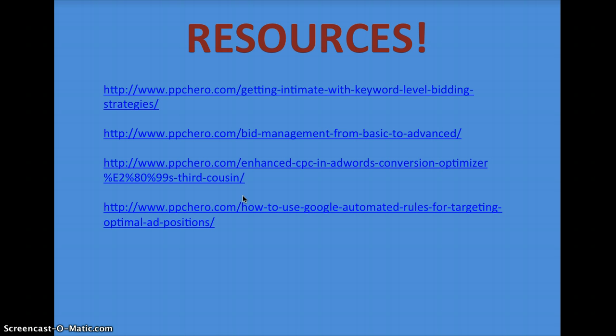And that's it — here are all the resources, and they are all PPC Hero resources. Go check those out if you have more questions. They cover keyword level bidding strategies, bid management from basic to advanced, enhanced CPC, AdWords conversion optimizer, and how to use Google automated rules for targeting optimal ad positions. Feel free to comment on this video blog if you have questions, and I hope you learned a little bit about automated bidding. Thanks!